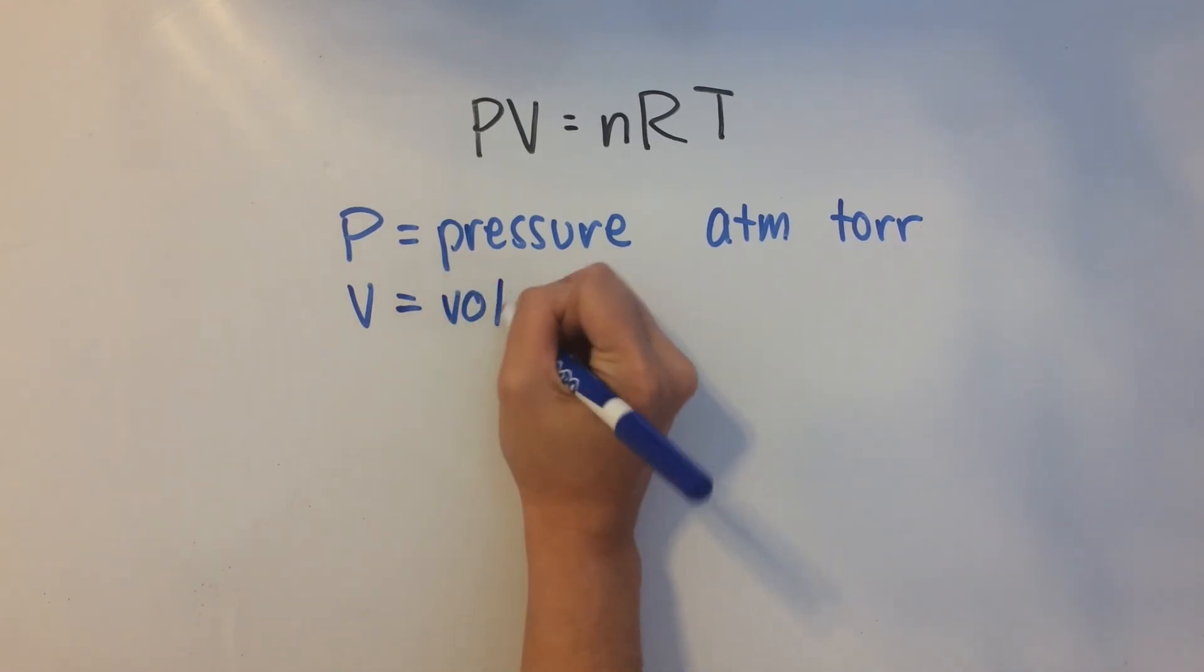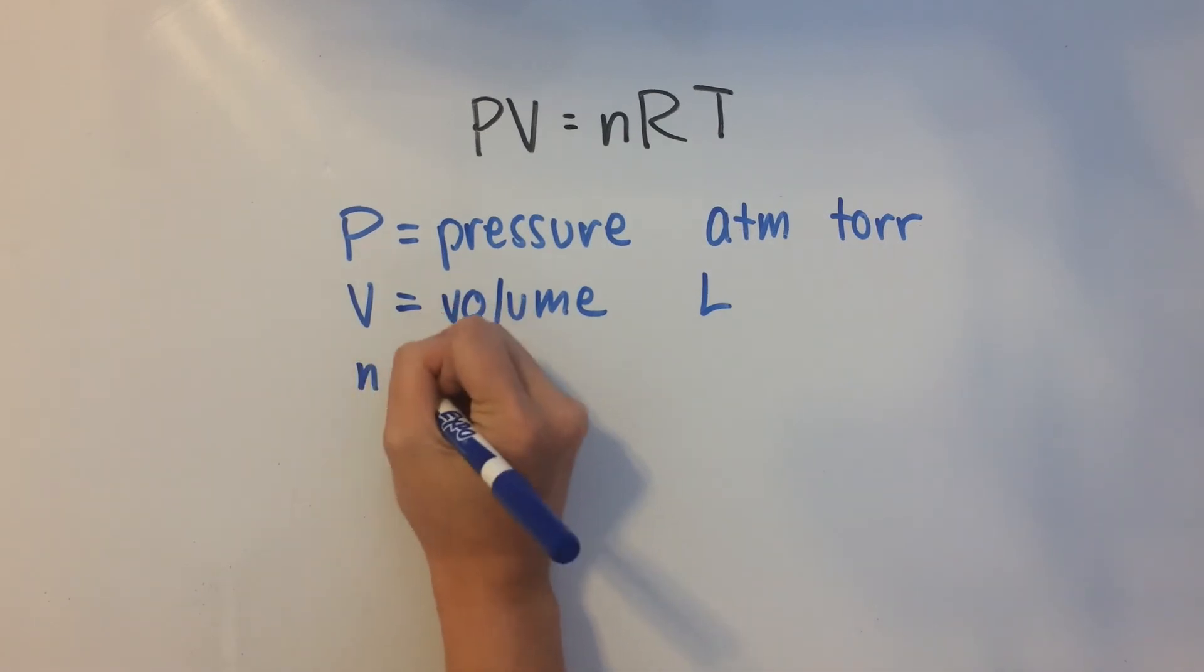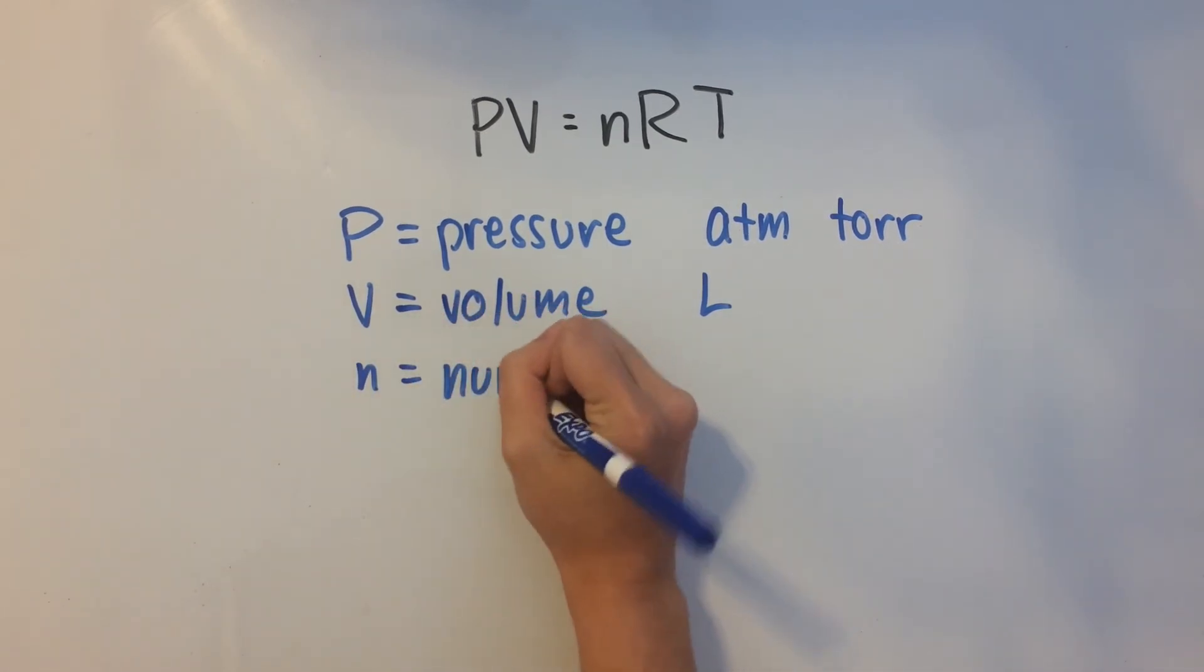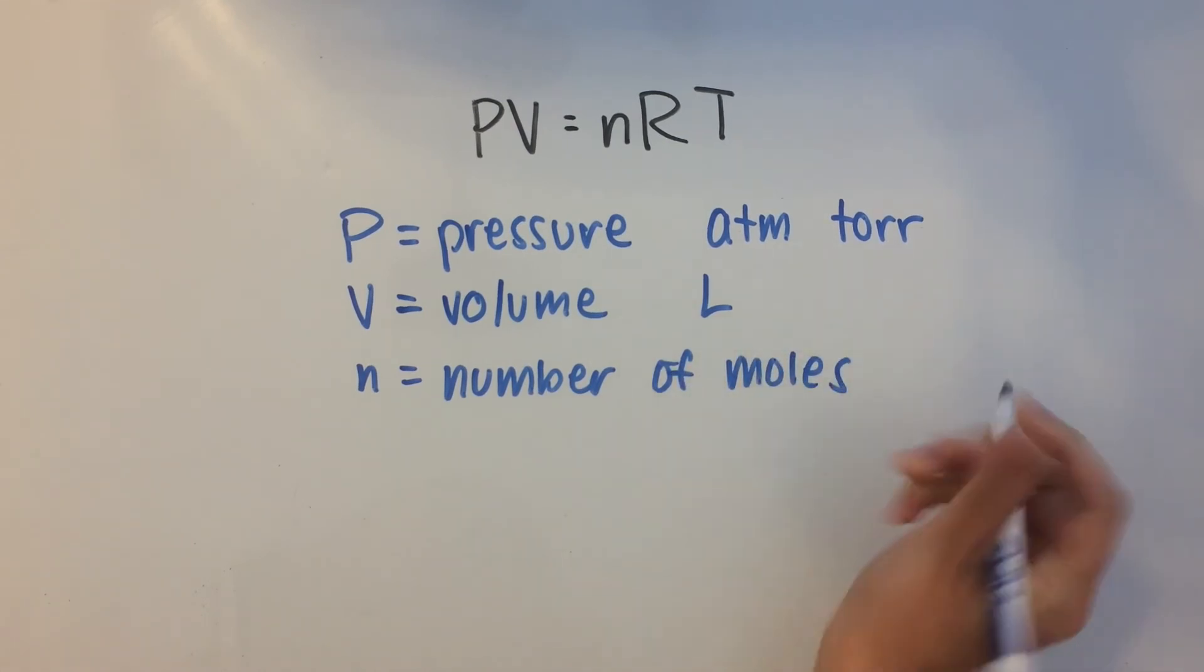And V stands for volume. That's going to be measured in liters. Now n is number of moles. And that's just going to be moles for the units.